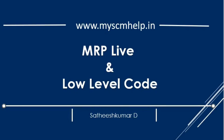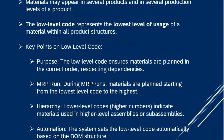In this video we will look at MRP Live and the low level code, because many times people understand the planning file entry but have limited understanding of what low level code is. In SAP, one component can be part of multiple products — at level one in certain products, level two in others. SAP maps where a material is placed in the product hierarchy, which is called the low level code. It is the lowest level of usage in the product structure.